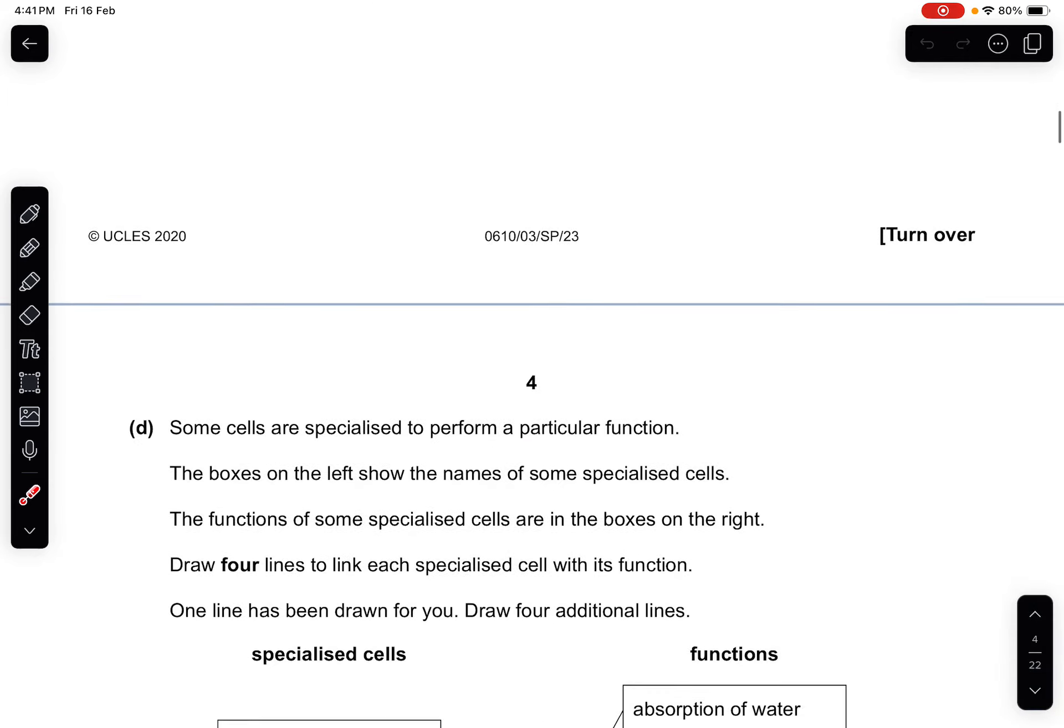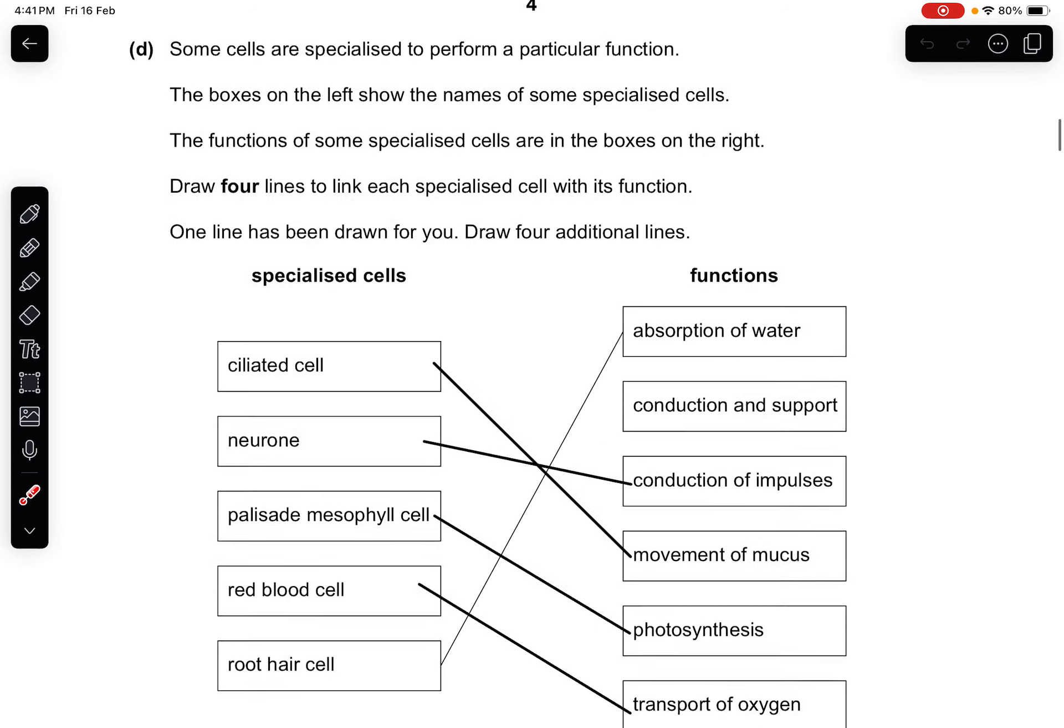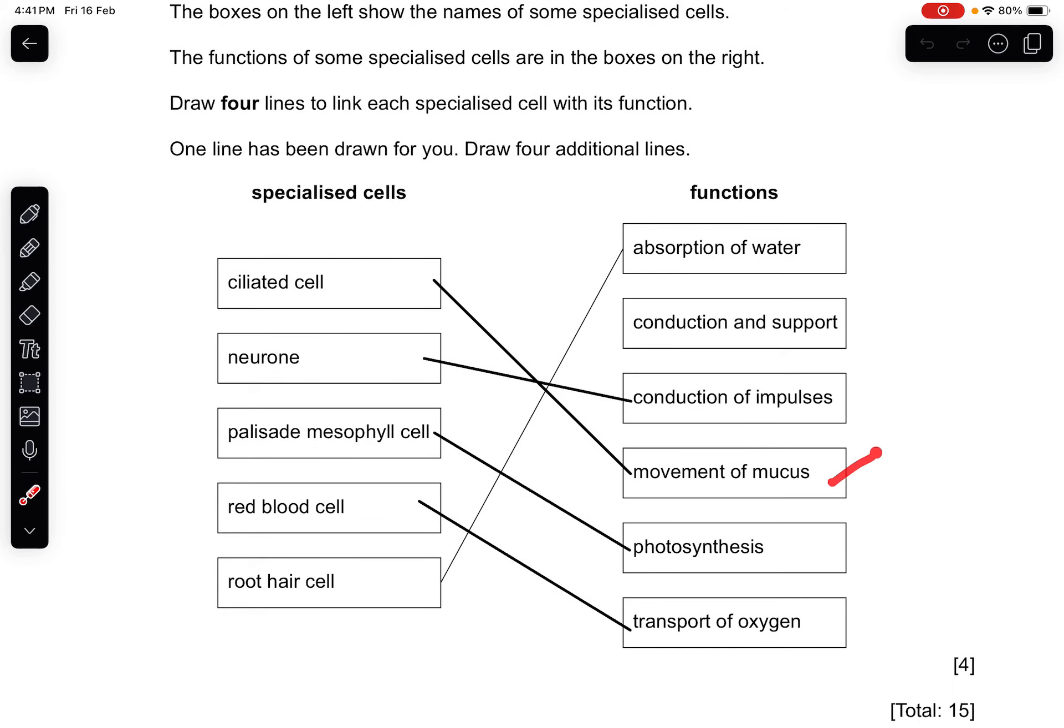Part D: Some cells are specialized to perform a particular function. The boxes on the left show the names of some specialized cells. The function of some specialized cells are in the boxes on the right. Draw four lines to link each specialized cell with its function. Ciliated cell is for movement of mucus, a neuron is for conduction of impulses, palisade mesophyll cell is for photosynthesis, root hair cell is for absorption of water.